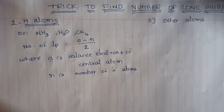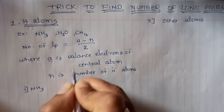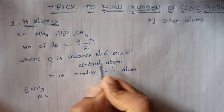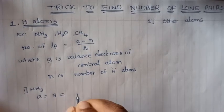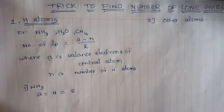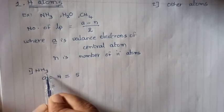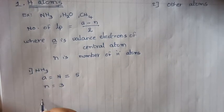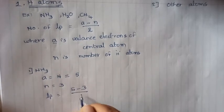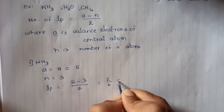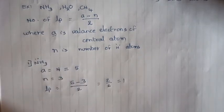If you know these two things you can calculate the number of lone pairs. First example: ammonia. A is the valency electrons on the central atom, which is nitrogen. Nitrogen belongs to the 15th group, so there are 5 valence electrons, so A equals 5. N is the number of hydrogen atoms, which is 3. So number of lone pairs equals (5 minus 3) divided by 2, which equals 1. Nitrogen has only a single lone pair.